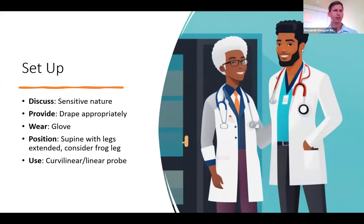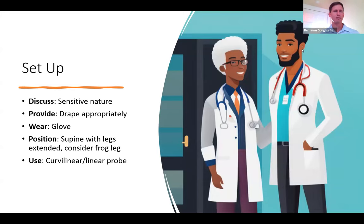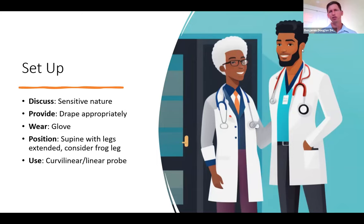Before getting into the ultrasound, it really helps to set it up appropriately. Discussing the sensitive nature of the anterior hip ultrasound with the patient helps set you up for success. Draping appropriately is crucial — make sure areas you'll look at are exposed and others are covered. Wearing gloves adds an extra barrier, especially as you're getting close to the groin. Position the patient supine with legs extended, though consider frog leg orientation for more medial structures. Pick your probe based on the patient's habitus and the structures you'll examine.